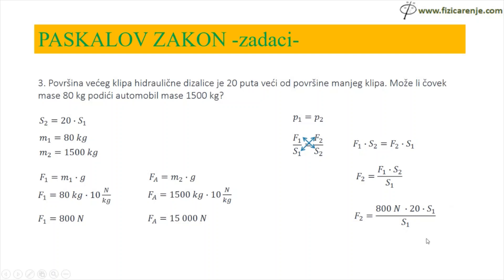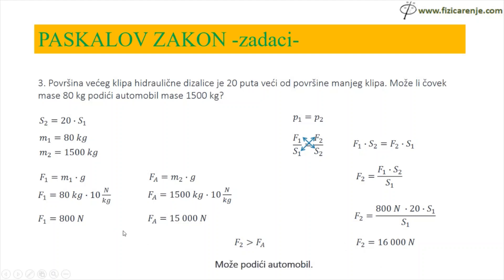S1 i S1 se skrate. 800 N puta 20 je 16.000 N — to je sila kojom čovek može podići teret. A težina automobila je 15.000 N. To znači da čovek može podići veću težinu od težine automobila i čovek može podići ovaj automobil.